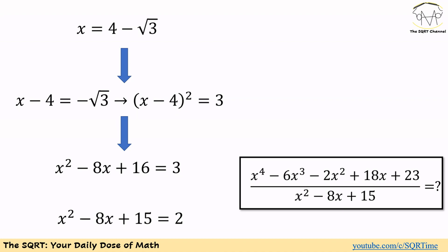Now that x equals 4 minus square root of 3, we can say x minus 4 equals negative square root of 3. Squaring both sides gives (x minus 4) squared equals 3, or x squared minus 8x plus 16 equals 3. We want to extract x squared minus 8x plus 15, which is the denominator in our fraction. Splitting 16 into 15 plus 1 and subtracting 1 from both sides gives x squared minus 8x plus 15 equals 2.